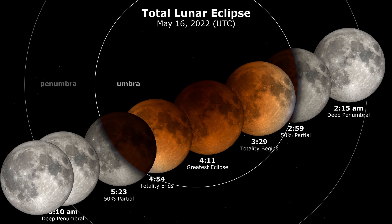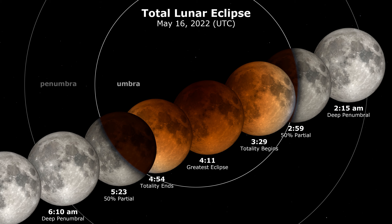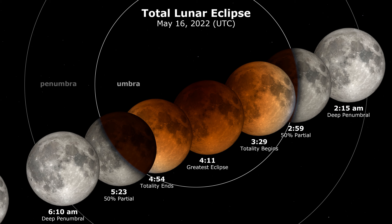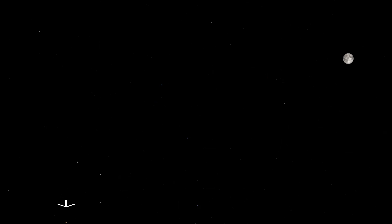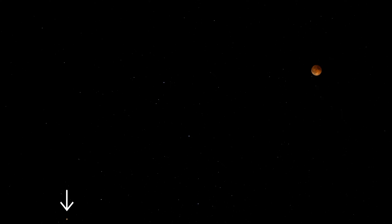During the process, the Moon moves through the constellation Libra. The more prominent stars of the neighboring Scorpius in the lower left include orange star Antares on the bottom edge of the frame.